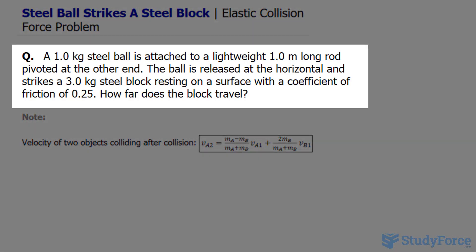The question reads: a 1.0 kilogram steel ball is attached to a lightweight 1.0 meter long rod pivoted at the other end. The ball is released at the horizontal and strikes a 3.0 kilogram steel block resting on a surface with a coefficient of friction of 0.25. How far does the block travel?